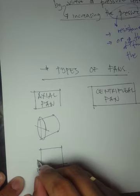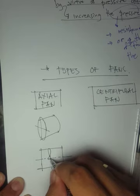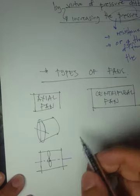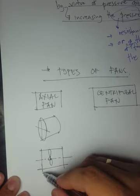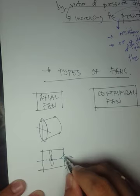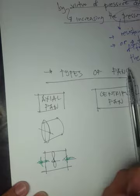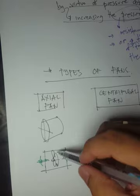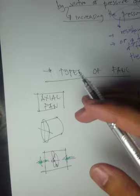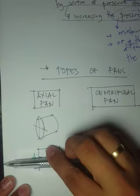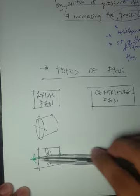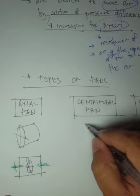The axial fan, shown in isometric and side views, has a centerline with fan blades around it. Air enters one end and exits the other end. The fan blades rotate at some speed, and the airflow is parallel to the longitudinal axis — it is a parallel flow fan.